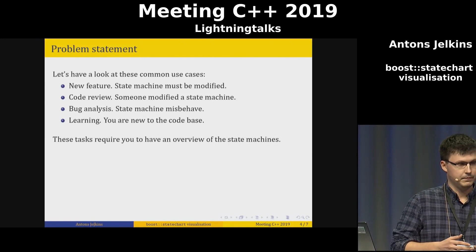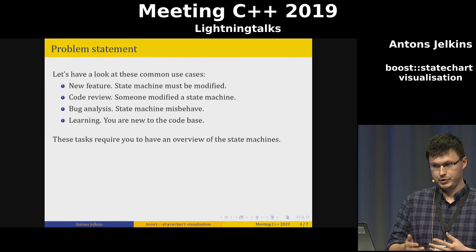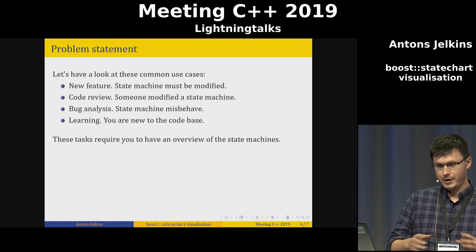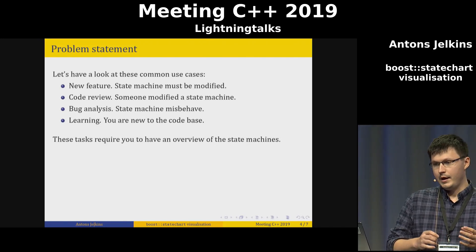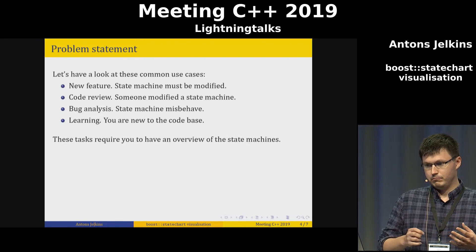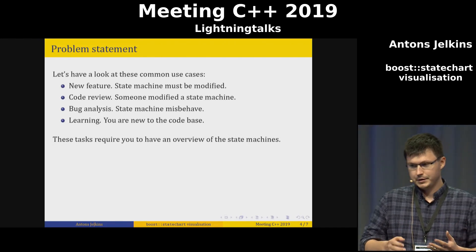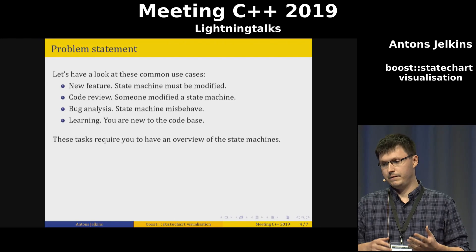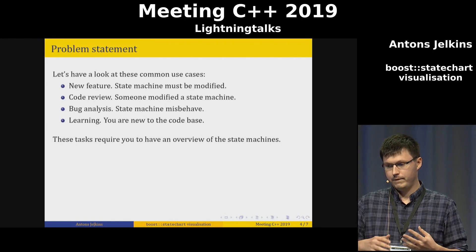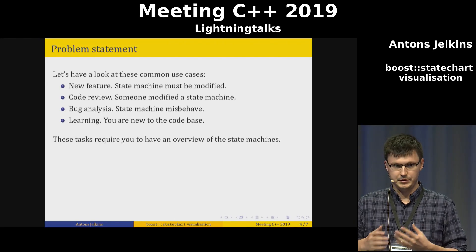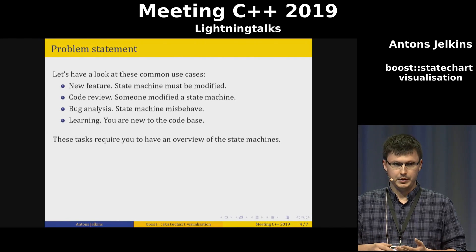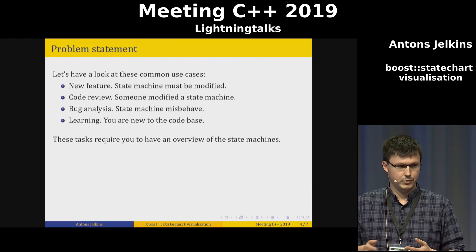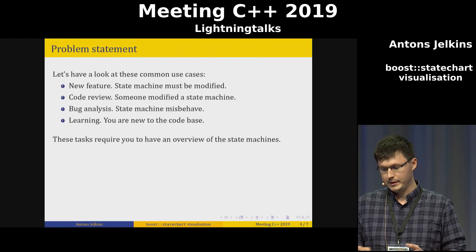For example, you get some code review and someone changed the state machine. You have a huge state machine and someone changed some transitions and you don't know what to do. You need an overview of what the new state machine looks like — the same for new features, modifications, bug analysis, or getting to know a new code base.